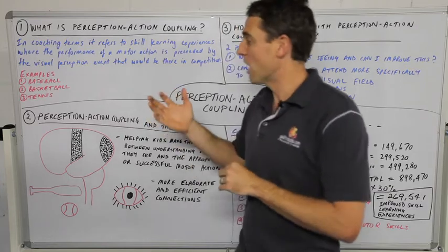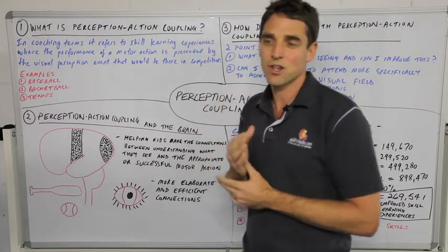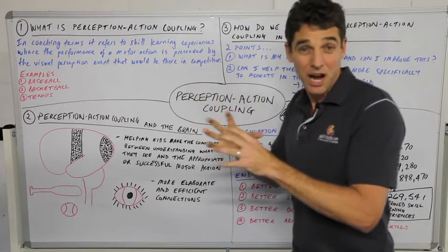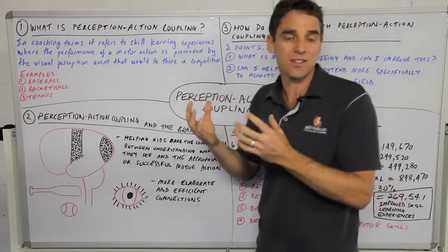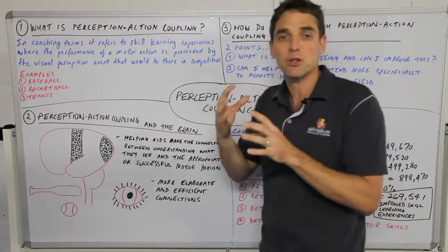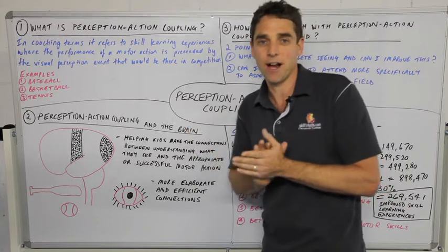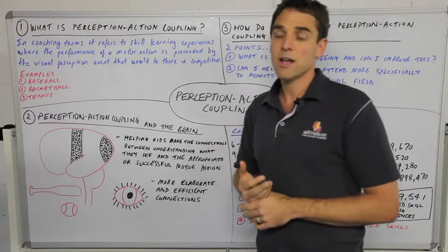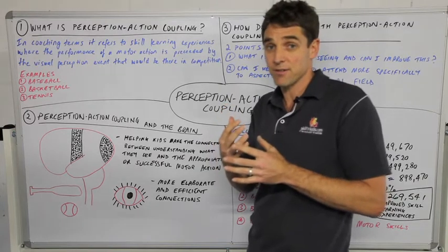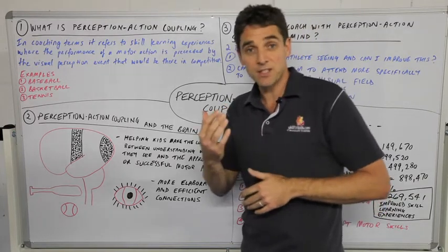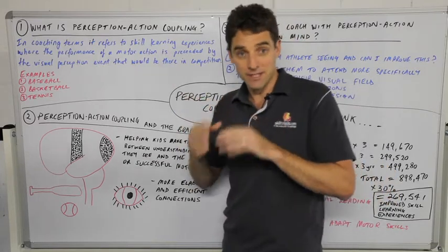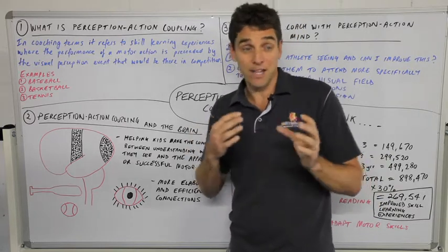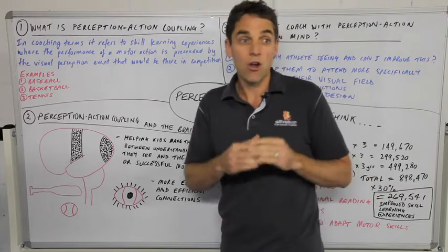So it's better if they're learning against seeing that type of event. We've got three examples of different training situations — where one adheres to perception action coupling, and the other was where it wasn't quite the same, where they didn't have the same perceptual experience before they performed the motor action. Now, perception is really the understanding of sensory information. Visual perception is understanding the visual information coming into the brain from the eyes and making sense of it — making sense of what's happening in the sporting field and the visual field.